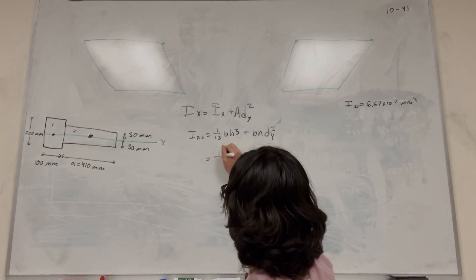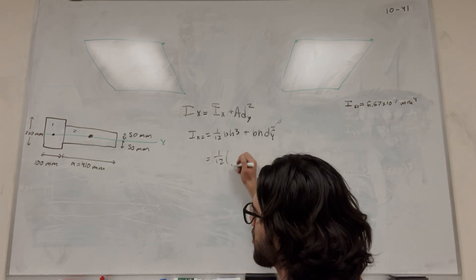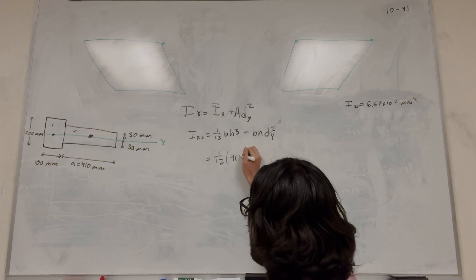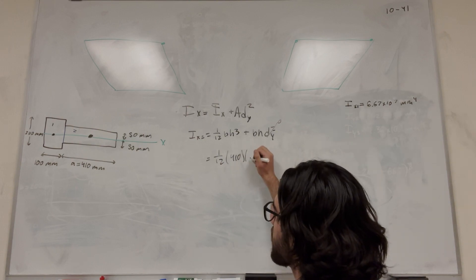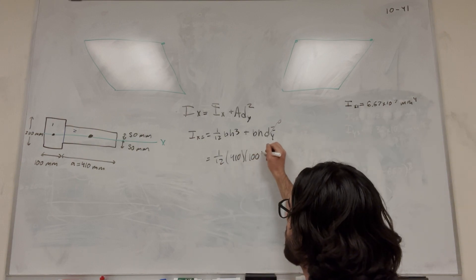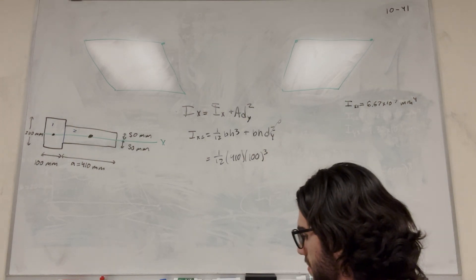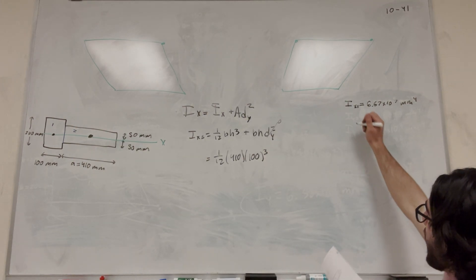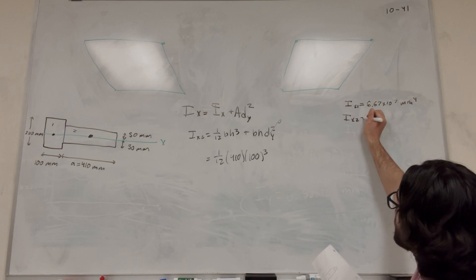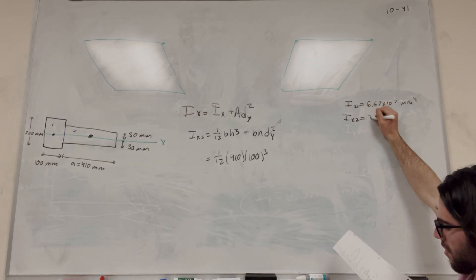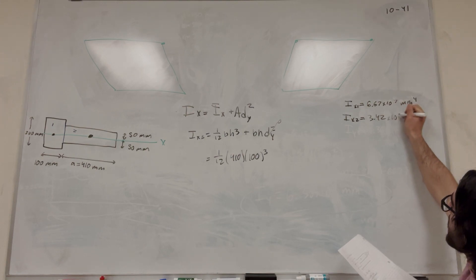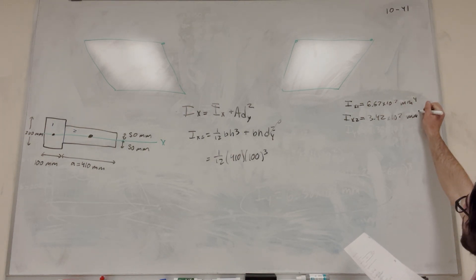So we end up with this equation, 1 over 12. The base of this rectangle is 410, which is A, and the height is 100, 50 plus 50, cubed. Then you get I_x2 equals 3.42 times 10 to the 7th millimeters to the fourth.